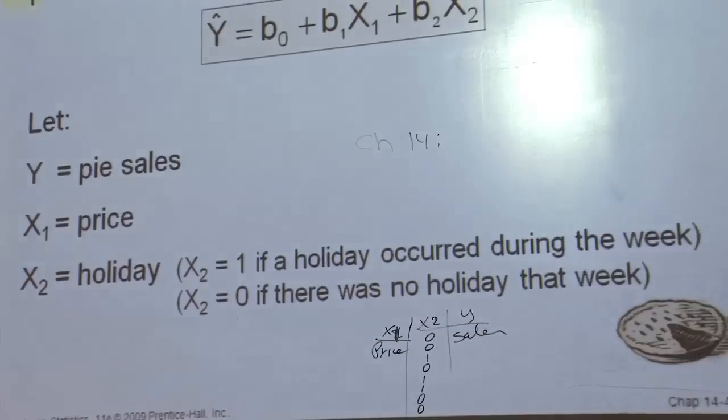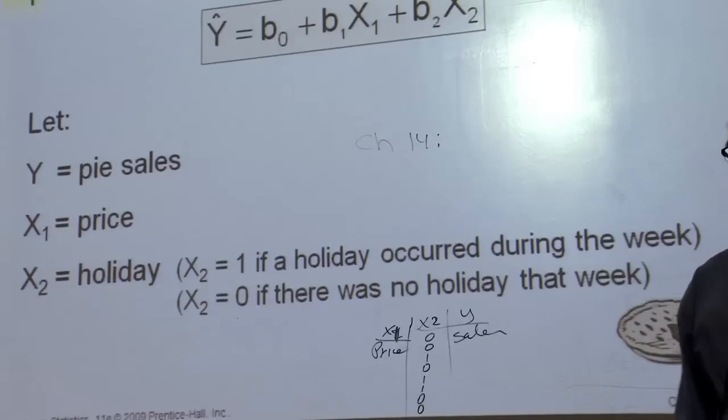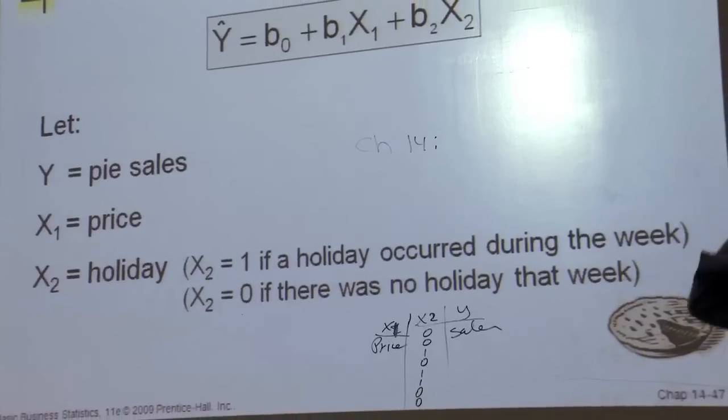All right, the point is you can use a one or a zero. The book has a few slides which you have available on how to interpret that. Another extension of this, what if you have three categories, let's say black, white, and Asian, you can't put one, two, and three because that means the three was three times as big as the one, that doesn't make any sense.